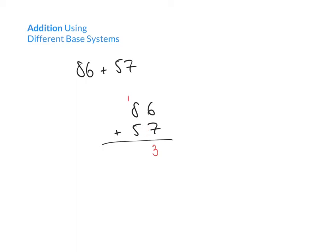So we've added 6 and 7 to get 13, retained the 3, and carried the 1. In the next column we now have 5 plus 8 plus the 1 that we've carried, giving an answer of 14. We enter the 4 but carry the 1 to the next column. Finally, that column only contains 1, so our last digit in the result is 1. So 86 plus 57 gives us a result of 143.